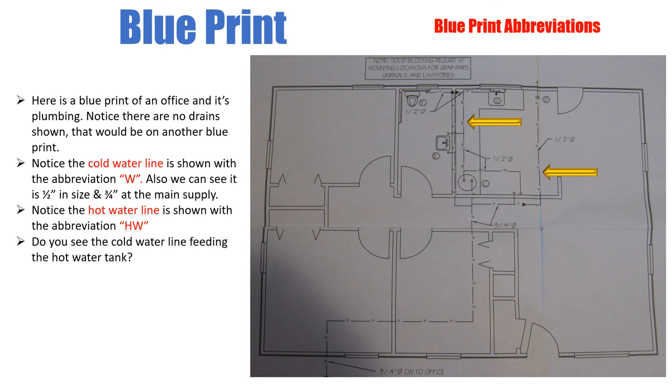Notice the hot water line is shown with an HW. That's the abbreviation that's used on this blueprint. Do you see the cold water line feeding the hot water tank? So you would follow it in from the main, the three quarter inch line. That's the cold water line feeding the hot water tank. And do you see the hot water tank? That's it right there.